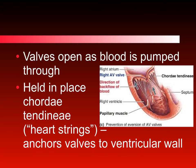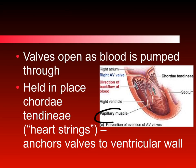Valves remain open when blood is rushing through them. Once the chamber has filled, the valve closes and is held in place by a structure called the chordae tendineae — stringy-looking materials, which means "heartstrings." The chordae tendineae are attached to a structure called the papillary muscle, which holds the valve closed once blood has entered the area.